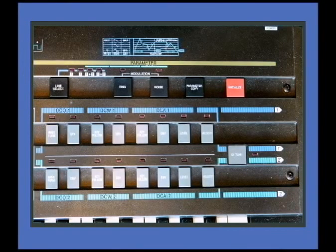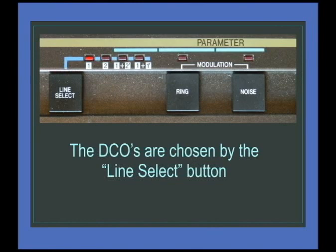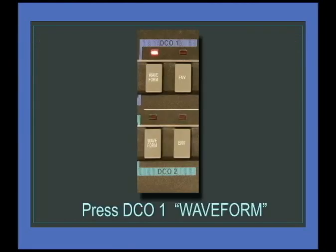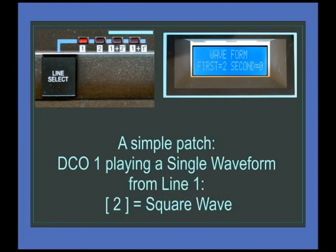To program the synth we have two lines, line one and line two, and they basically refer to DCO one and oscillator two. If you're using a single oscillator it's 16-note poly on the CZ1.